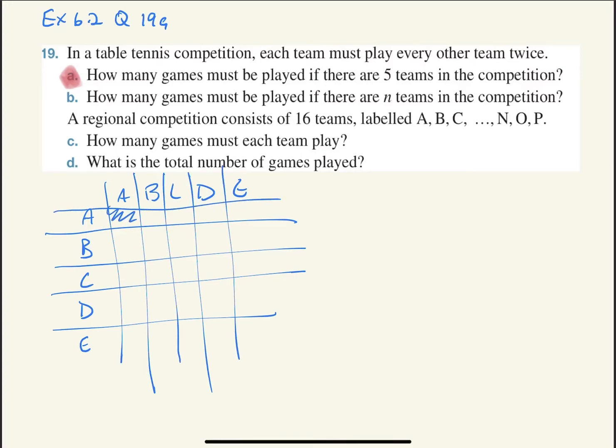A cannot play against A, they can't play against each other. So A is going to play 1, 2, 3, 4 games. And B is going to play 4 games, C is going to play 4 games, D is going to play 4 games, and E is going to play 4 games.